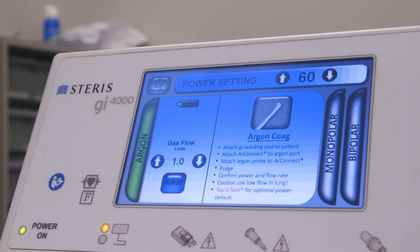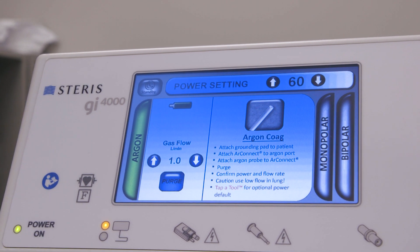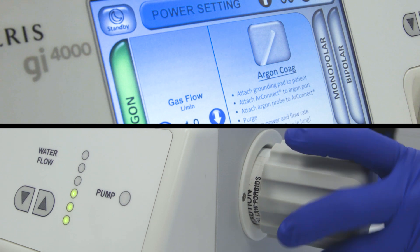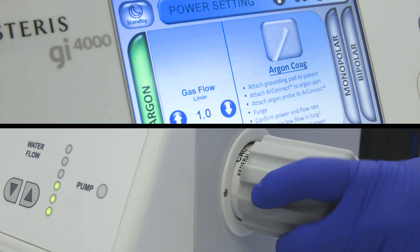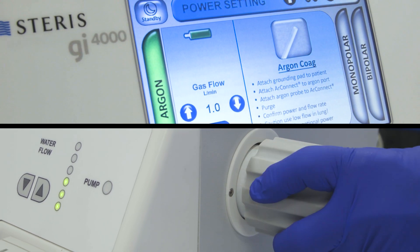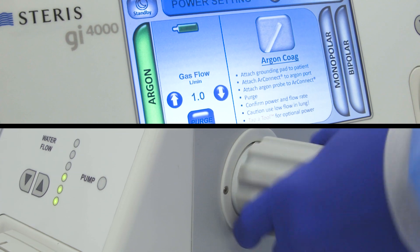Argon bottle is not fully tightened. To resolve this issue, continue turning the bottle clockwise until it is fully engaged. This can be a quarter to two full turns tighter, even after the green gas bottle icon appears on the screen.